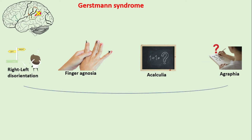Characteristically, these four symptoms make a tetrad of Gerstmann syndrome and can be remembered by the mnemonic 'bad accountant,' referring to someone who cannot perform or write simple calculations using their fingers.